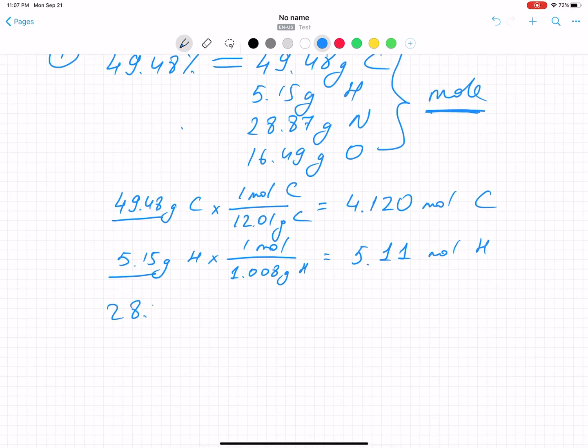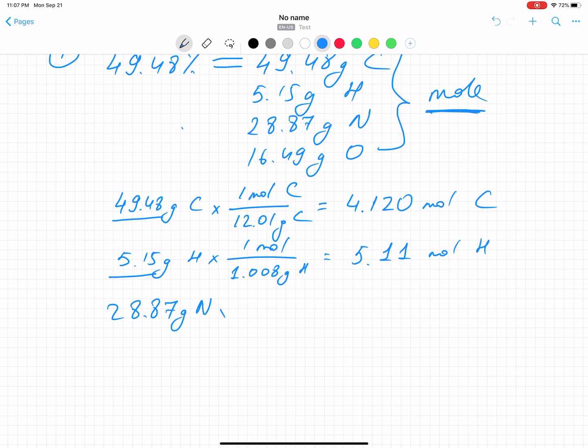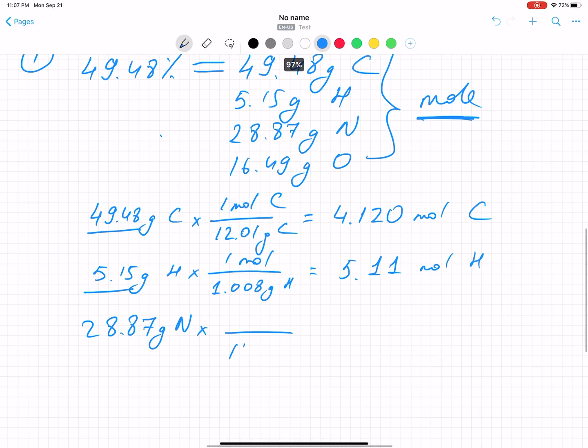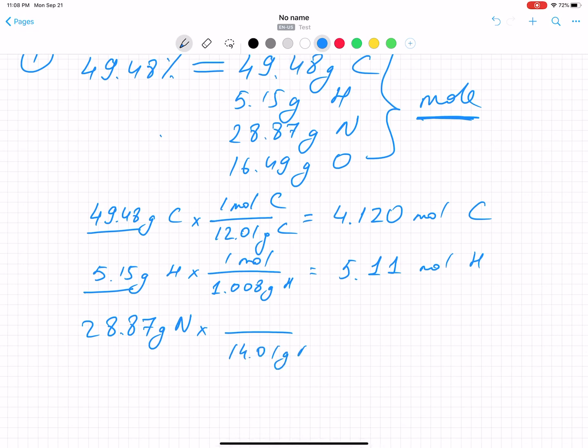Next step will be find 28.87 grams of nitrogen. And if you look at the atomic weight, it's 14.01. One mole always. 28.87 over 14.01, you'll find 2.061 mole of nitrogen.